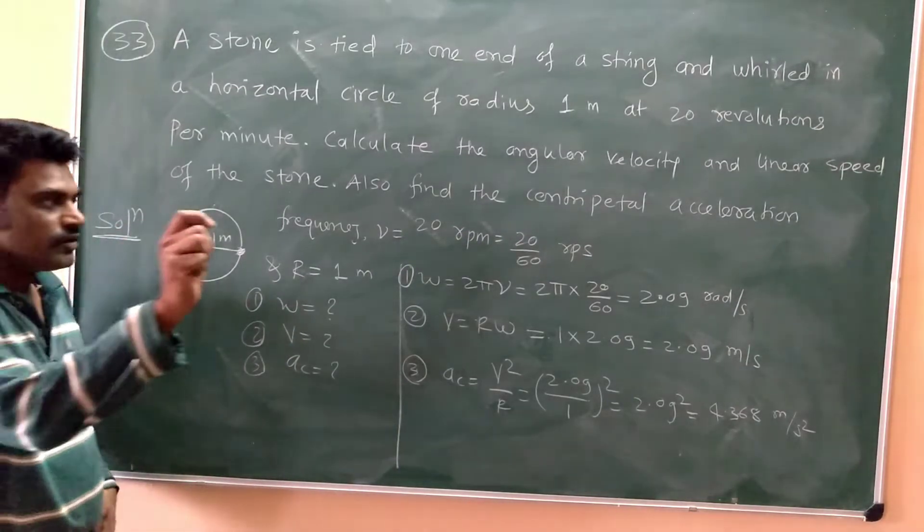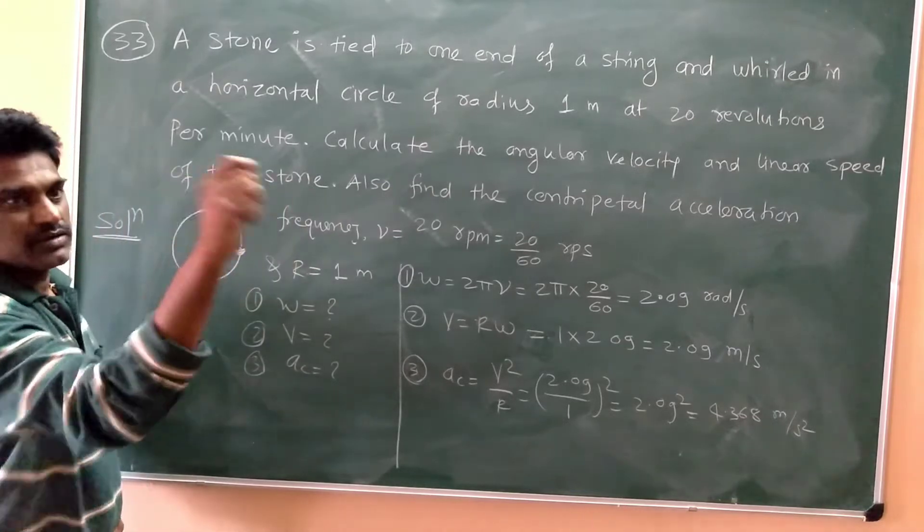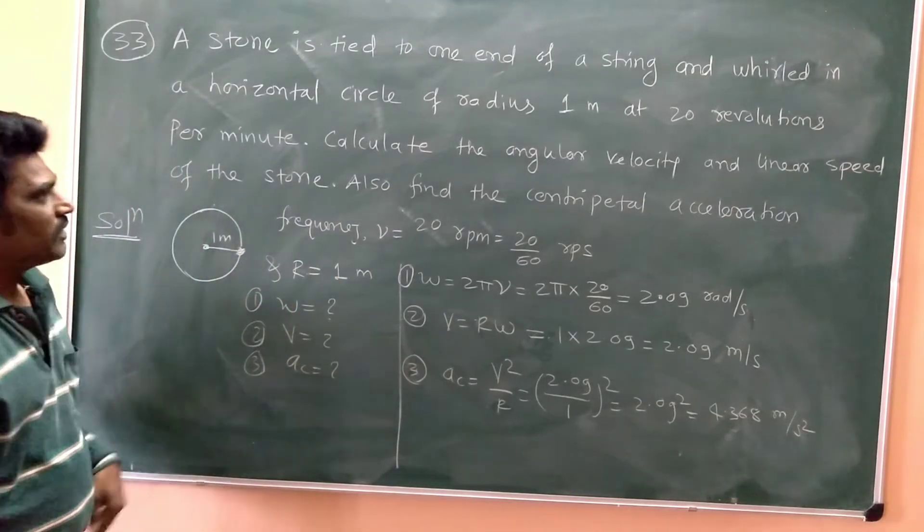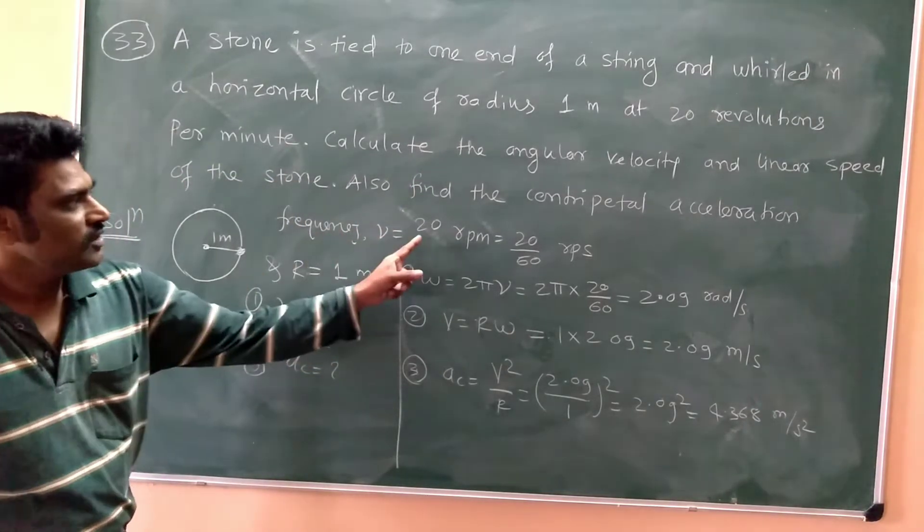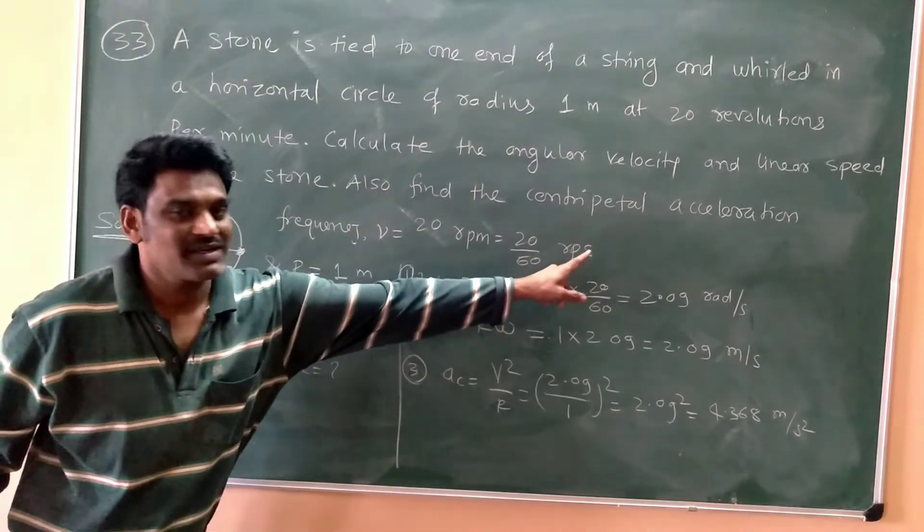Now look, the string is there of 1 meter length, it is rotated like this, so radius will be 1 meter. Now 20 revolutions per minute, this means 20 revolutions per minute, so 20 by 60 revolutions per second.